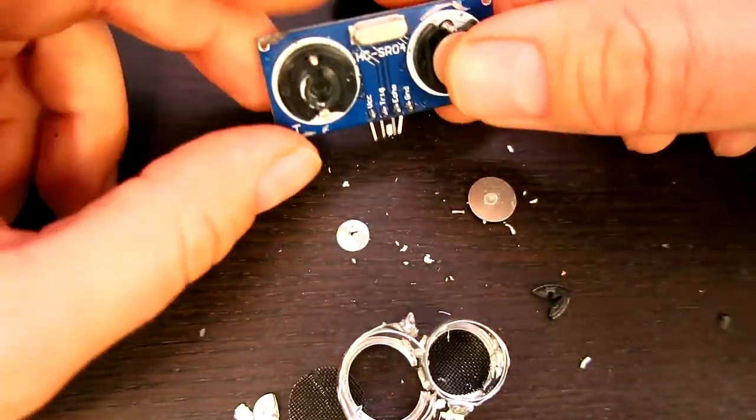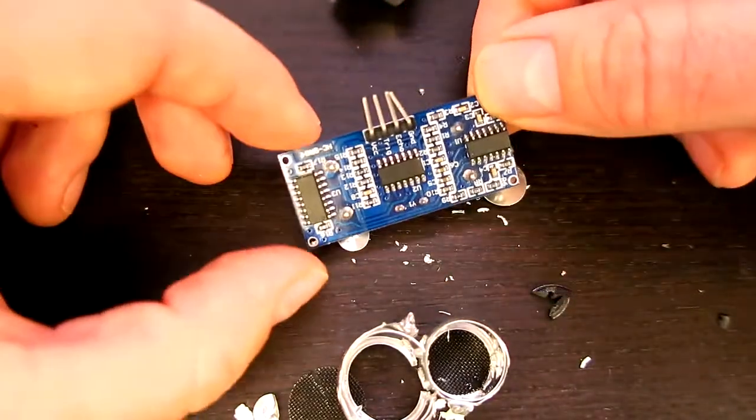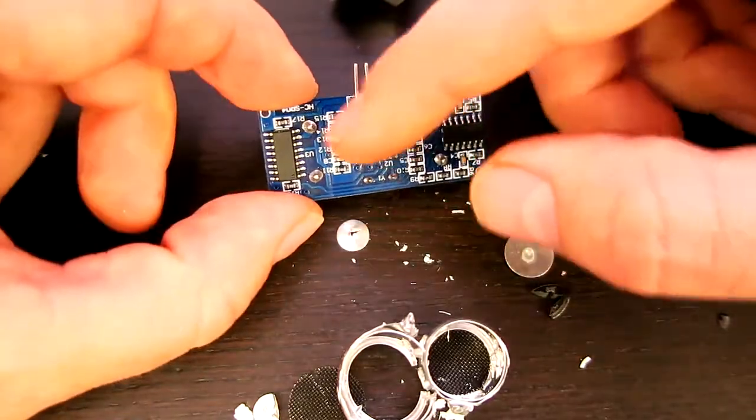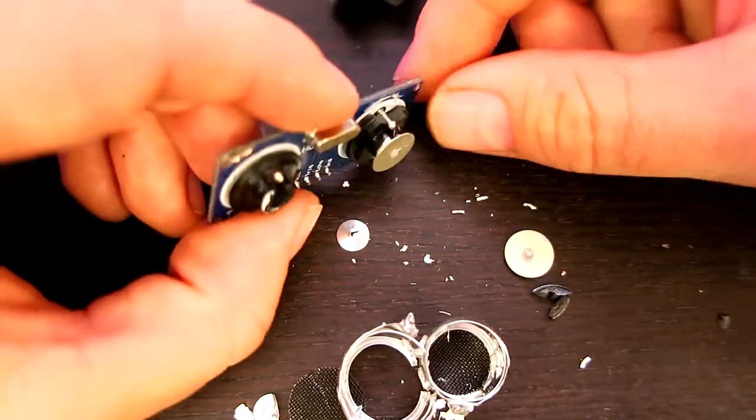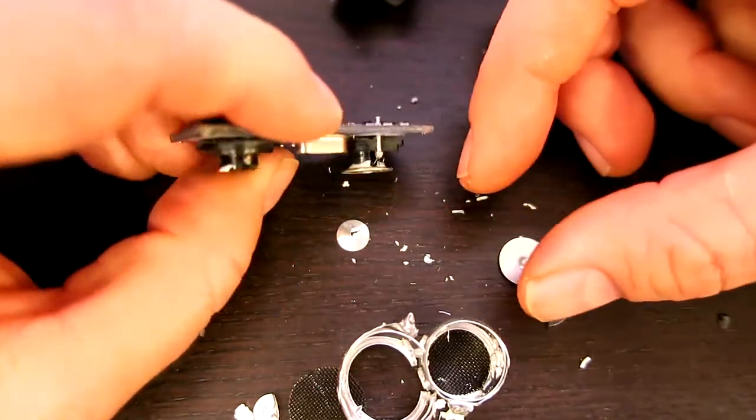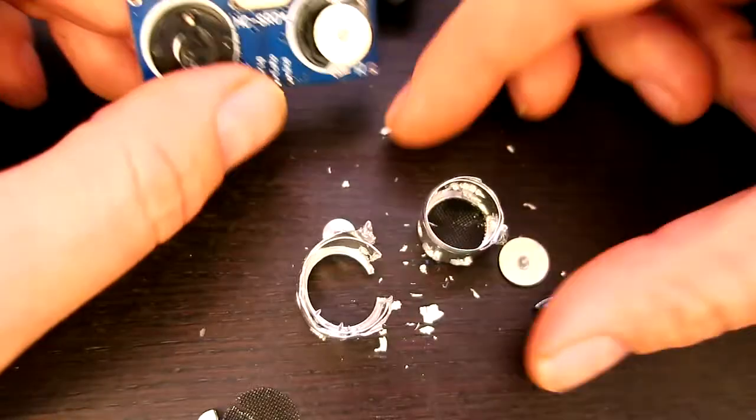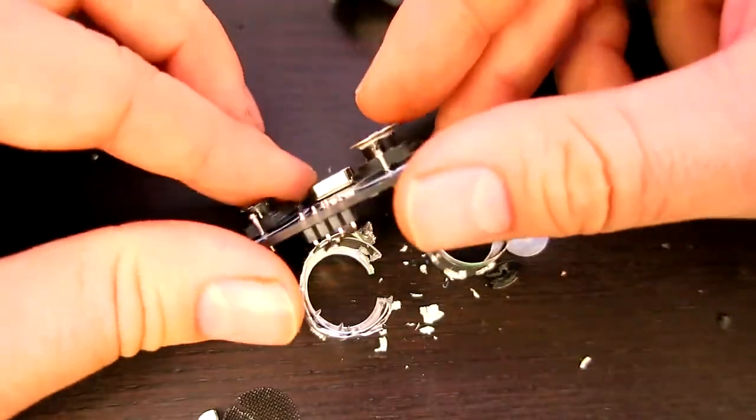So you can find some different schematics of how these things work. These things are real common, and there's all kinds of discussions out there about people talking about what ICs these are and how they actually work, so you can find that part of it, but I was never able to find anything on exactly what the design of the inside of these things actually look like, so there you have a little bit of an idea of how they work anyway.